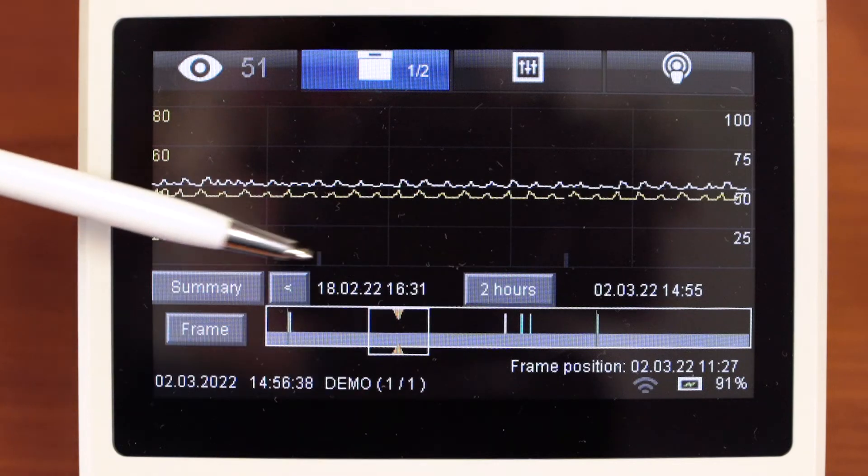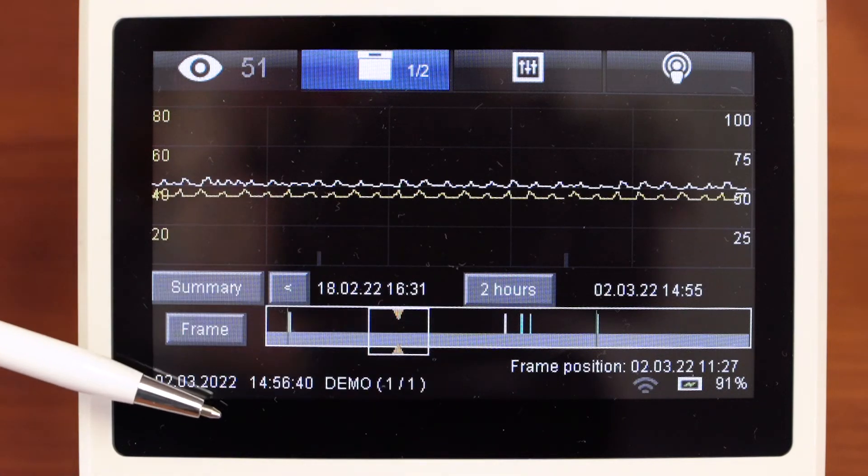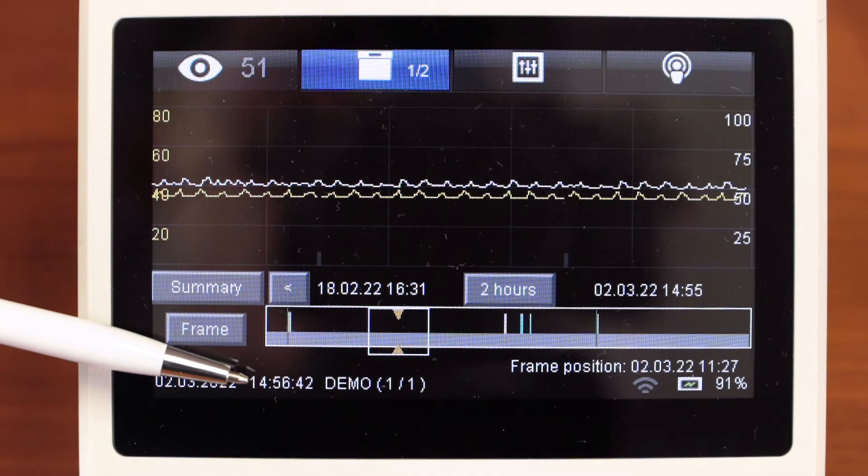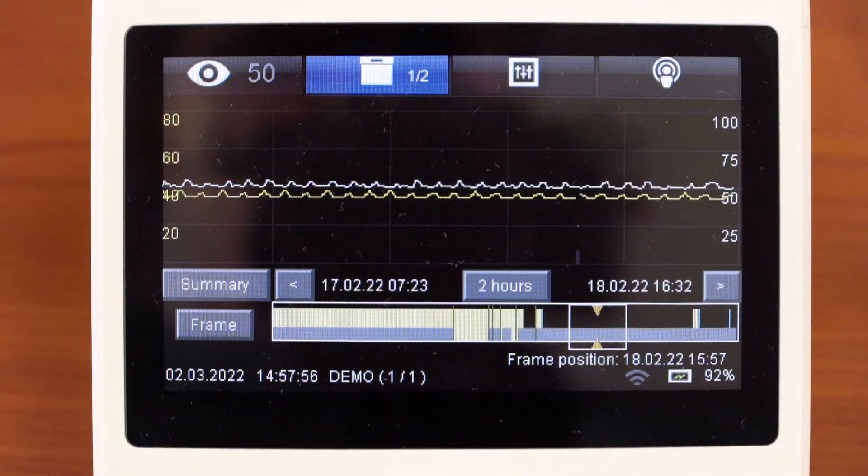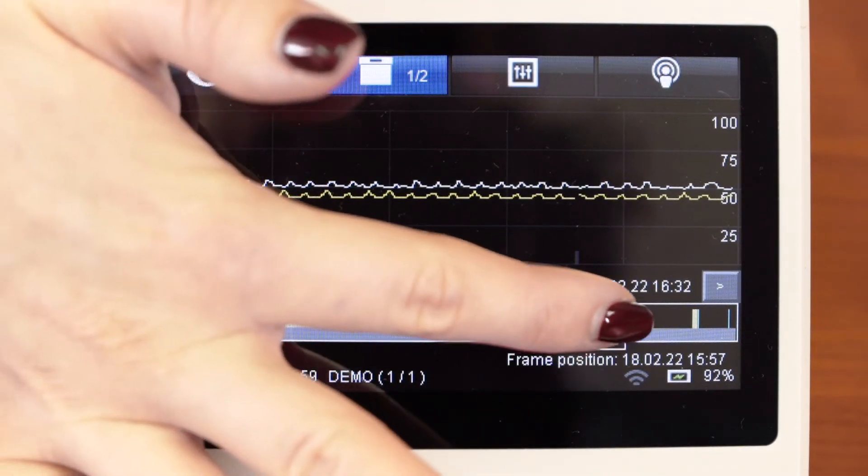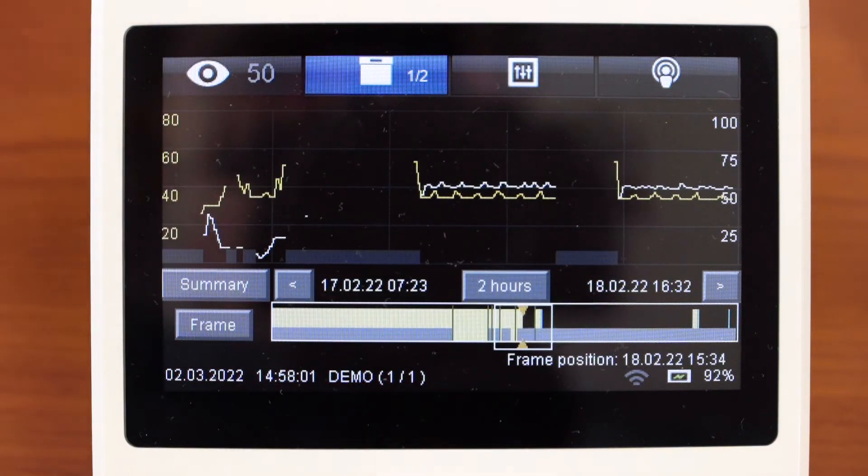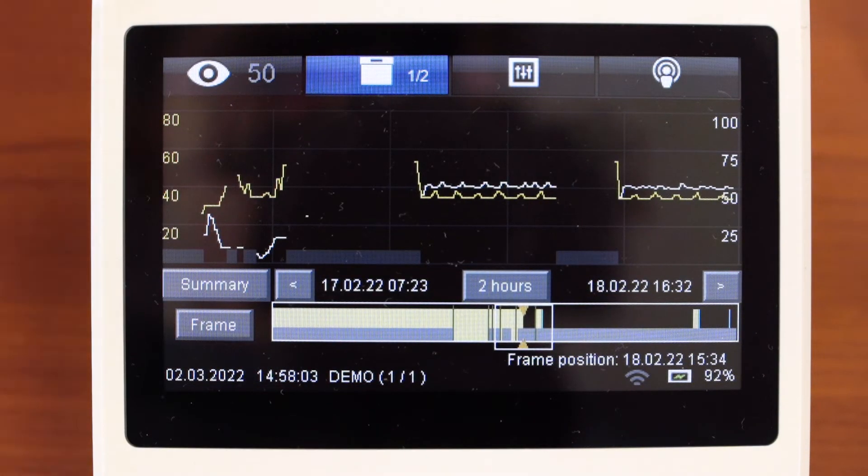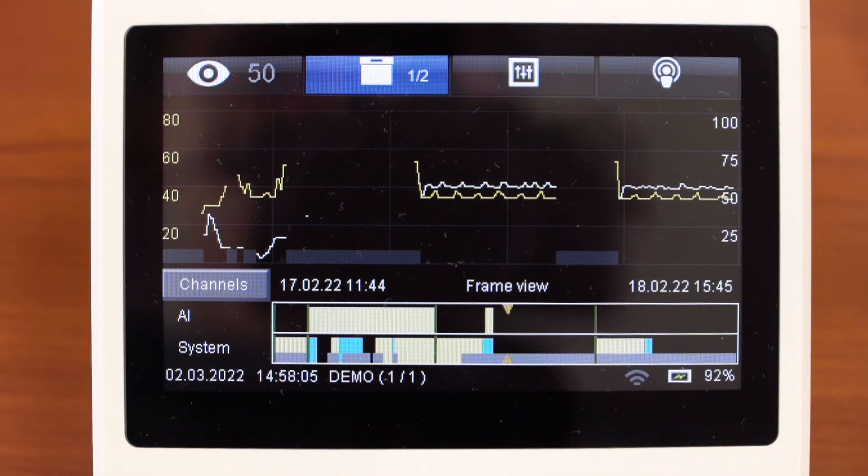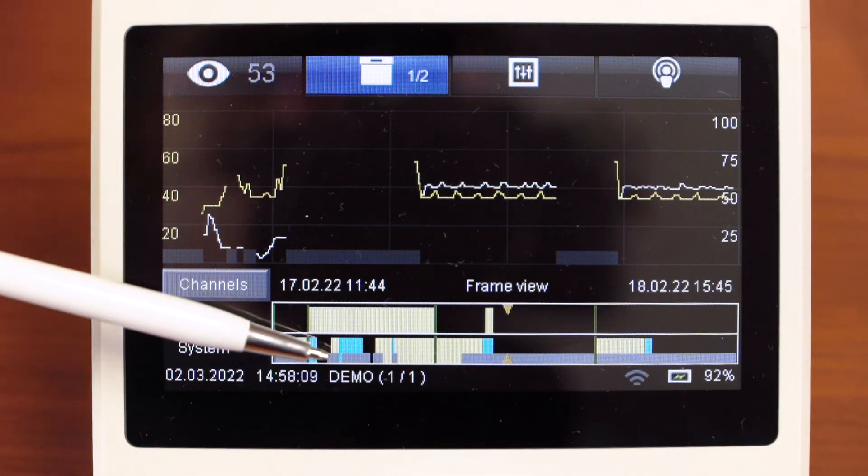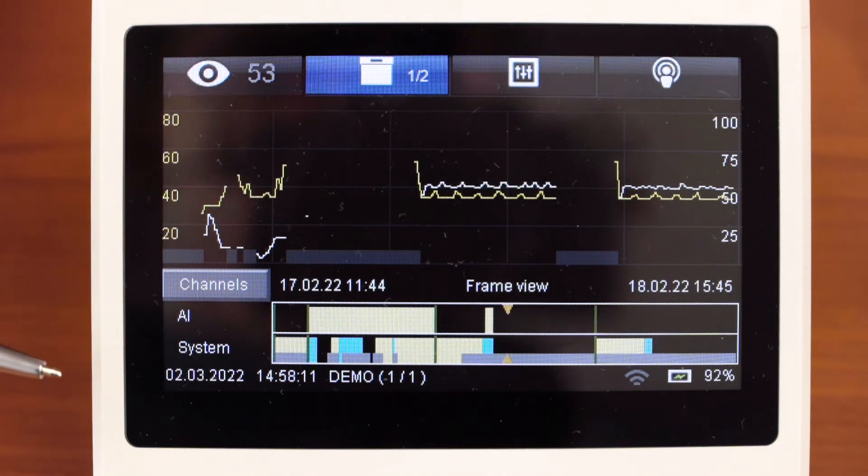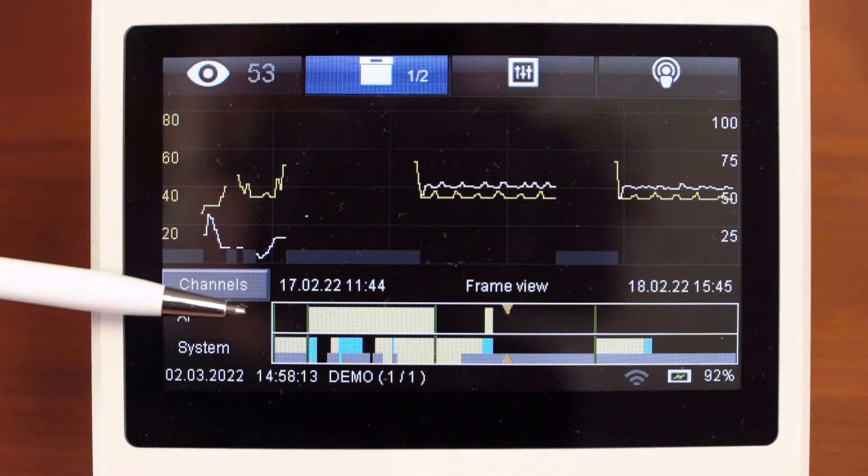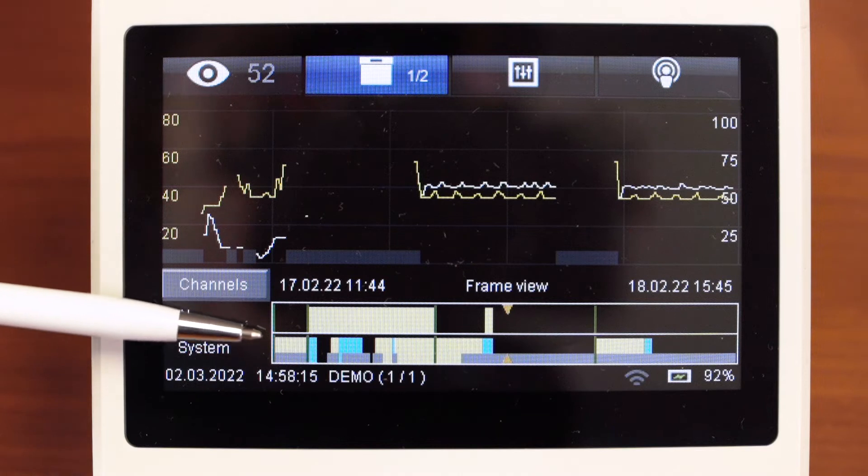Here is a field for alarm events and technical events. Using frame we can choose the most interesting part. Press summary. So we can see the part in details. There are two fields for activity index alarms and system alarms.